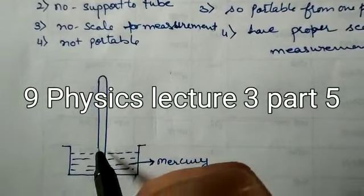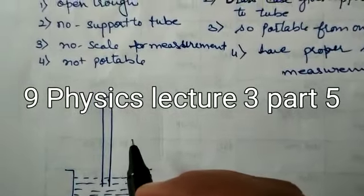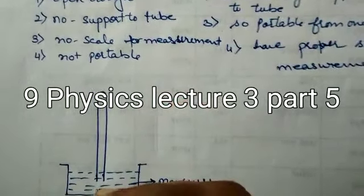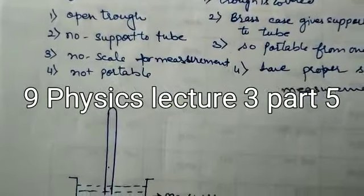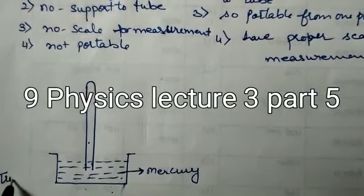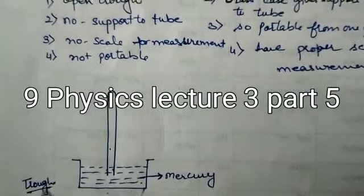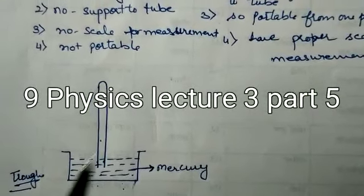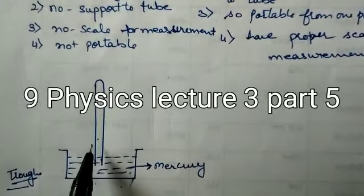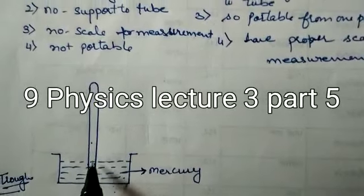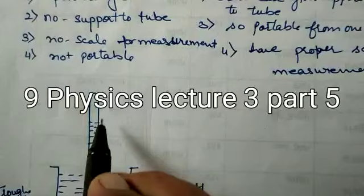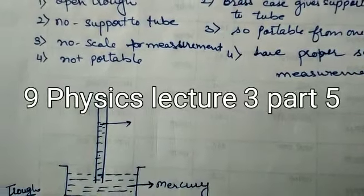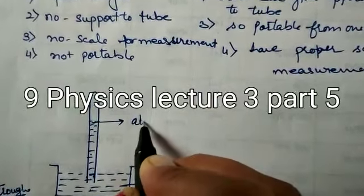If it is not having vacuum, this mercury is not going to rise in upward direction. So, simple trough, in simple trough we fill this trough with mercury and place this vacuum tube inside the mercury so that the mercury will rise upward. If mercury is going to rise, it rises up to some level which show the atmospheric pressure.